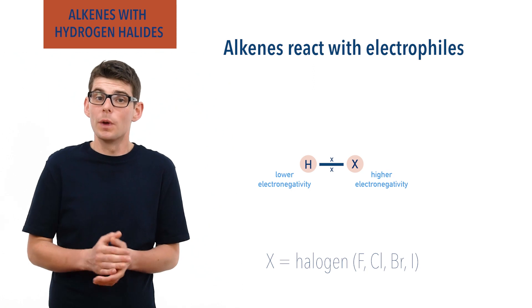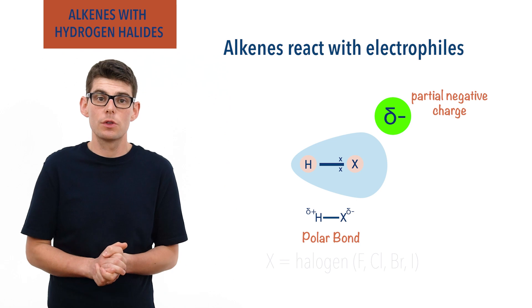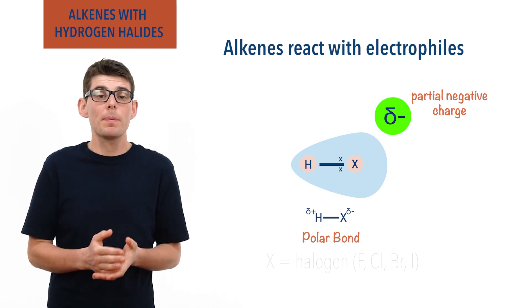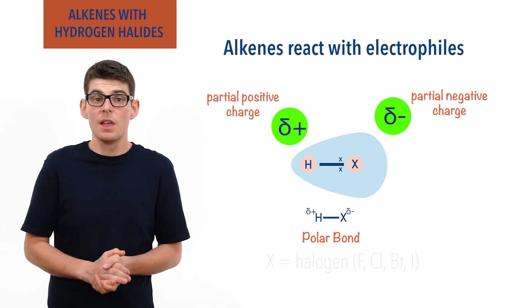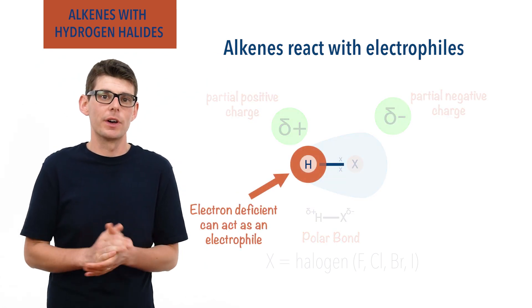As a result, the halogen will attract the electrons in the bond towards itself and end up with a partial negative charge, leaving the hydrogen with a partial positive charge. This means the hydrogen becomes electron deficient and is able to act as an electrophile.